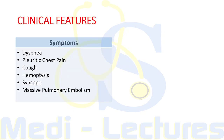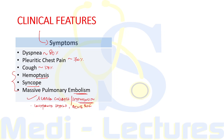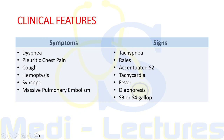Regarding clinical features, dyspnea is present in almost 80 percent of patients. Pleuritic chest pain occurs in almost 70 percent of cases, and cough in almost 50 percent. Patients can also present with hemoptysis and syncope. Characteristic features of massive pulmonary embolism are sudden collapse or severe hypotension, unexplained hypoxia, engorged neck veins, and acute heart failure presenting as acute cor pulmonale due to acute obstruction of the right ventricular outflow tract.